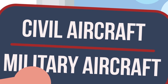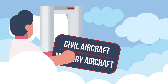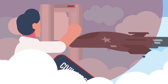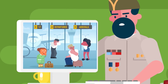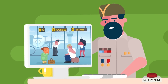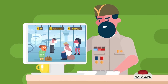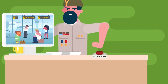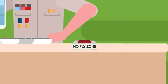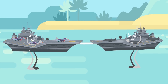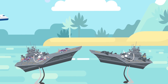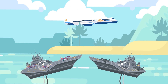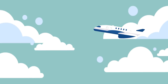Typically, no-fly zones are set up in a military context and enforced by armed fighter patrols. When set up within a military context, no-fly zones are meant to keep civilian airplanes out of a war zone and can be established to warn a hostile nation not to even attempt to take the skies.